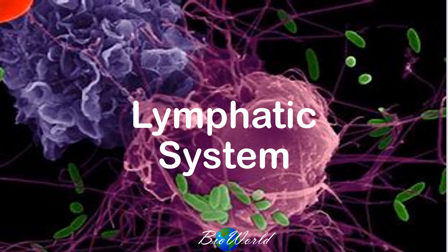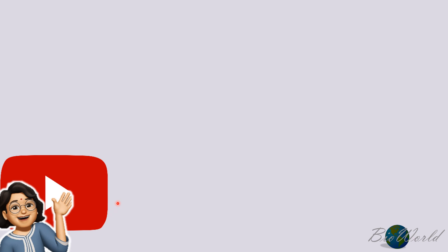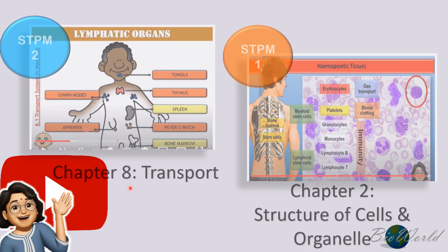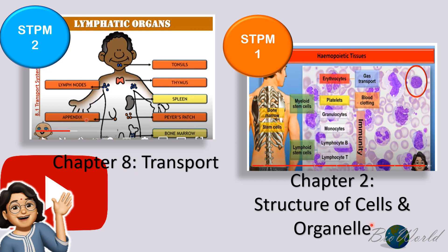Welcome to Bioworld. Today I'll be talking about the lymphatic system. We've discussed the lymphatic system previously in chapter 8 of semester 2 and chapter 2 of semester 1. Earlier in chapter 8, we discussed how the lymphatic system supports the blood circulatory system in the role of transport. Whereas previously in semester 1, when learning about the connective tissues, you were introduced to some of the white blood cells related to the lymphatic system. You can review those videos to help refresh.